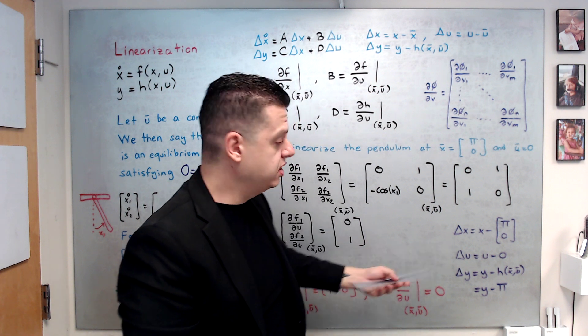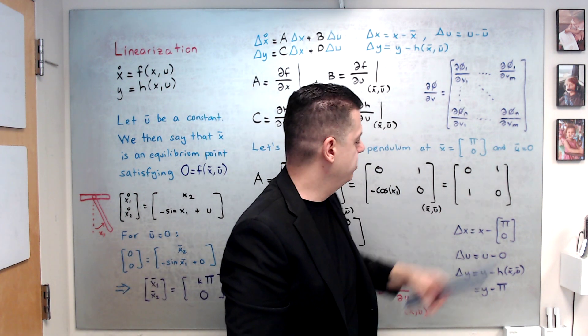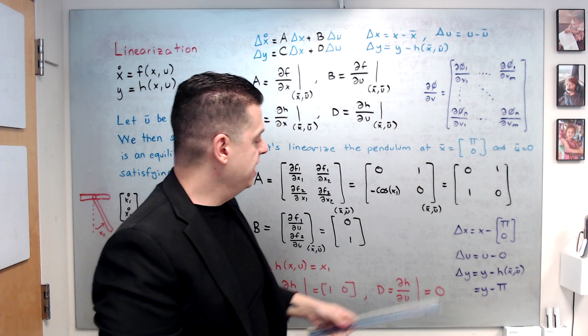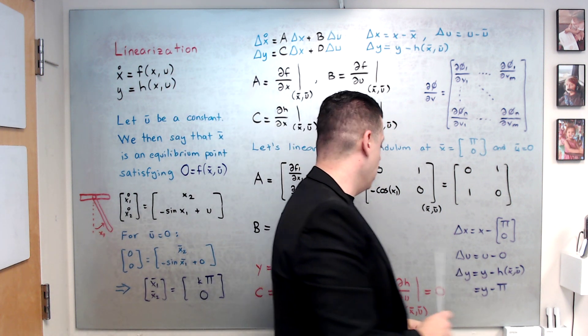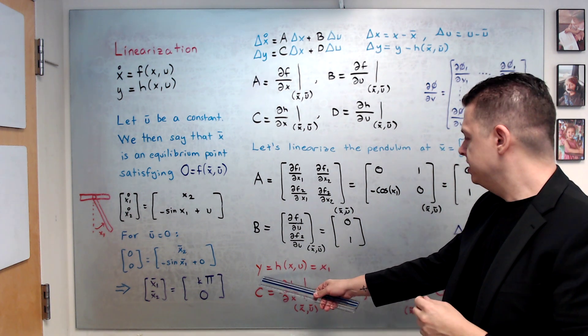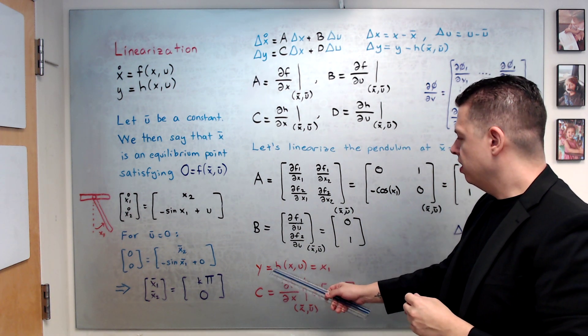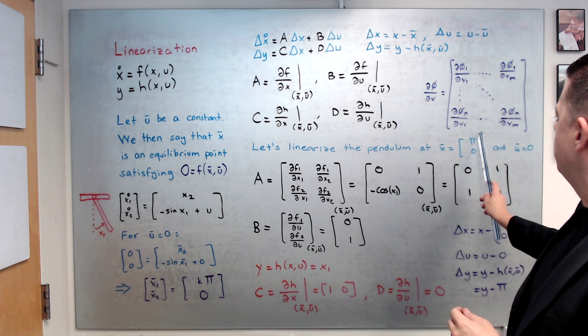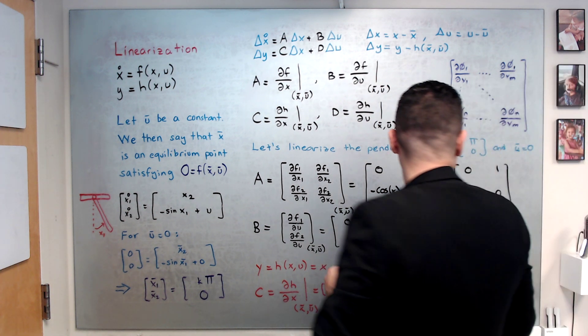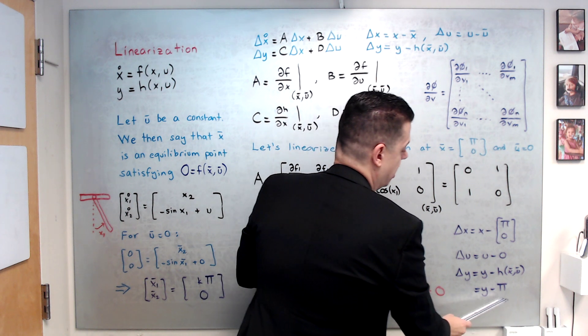So, that's why we have this equilibrium point for this linearized system. Delta u is easier. So, u minus 0 since we choose u bar to be 0. And, finally, delta y is y minus h(x bar, u bar). Looking at our h, basically, h(x bar, u bar) is x1 bar. x1 bar is basically pi. So, we have delta y is y minus pi.